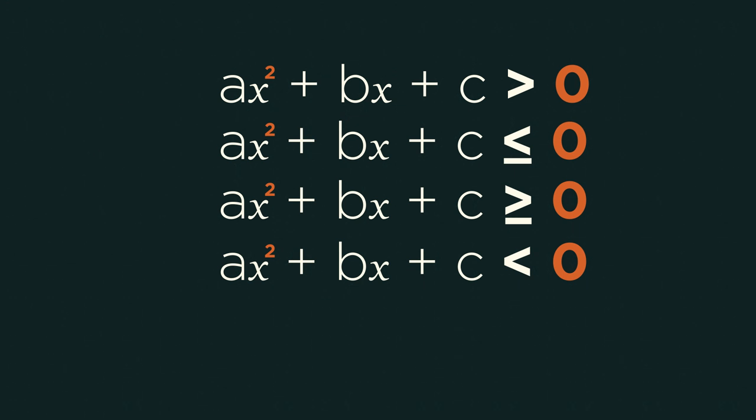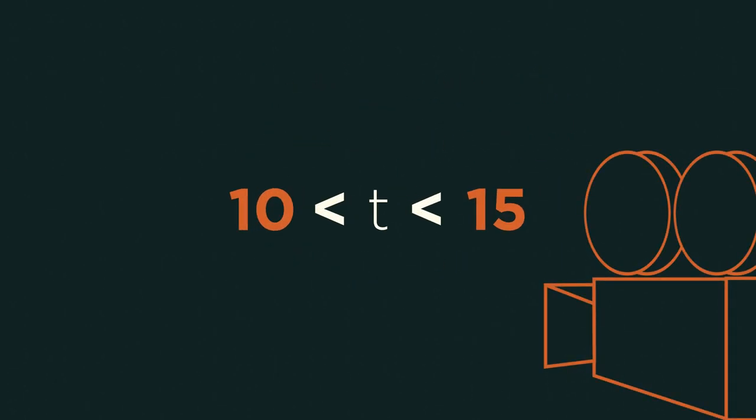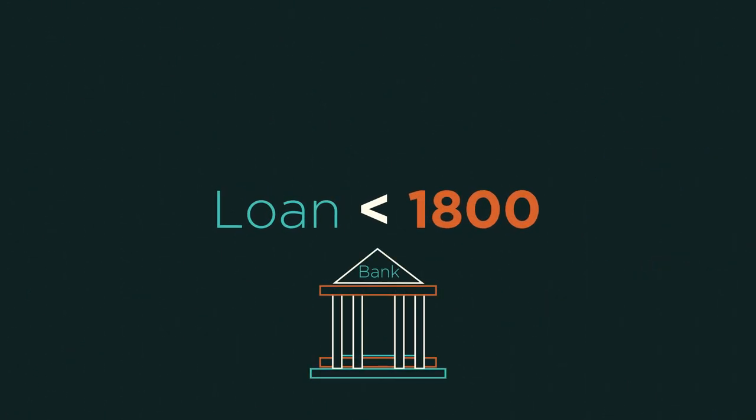which actually have many real life uses. For example, I might use them to work out that I need to film a race car between 10 and 15 seconds after the start of a race. And they're used throughout finance, such as working out what loan you can afford based on your expenditure.